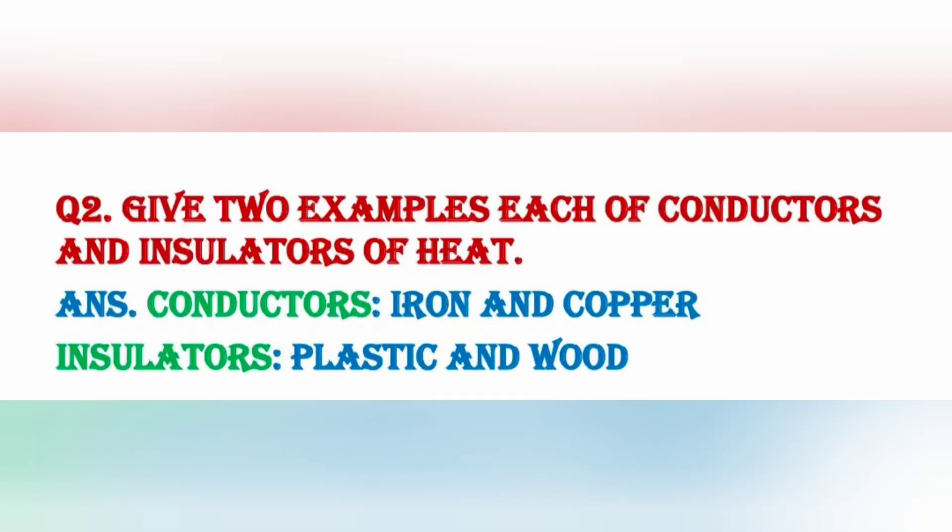Next question: give two examples each of conductors and insulators of heat. तो आपको उष्मा के कुचालक और सुचालक दोनों के दो-दो उदाहरण देने हैं. Conductors — उष्मा के सुचालक — like iron and copper. Insulators — उष्मा के कुचालक — like plastic and wood, जिनमें उष्मा एक पॉइंट से दूसरे पॉइंट की तरफ transfer नहीं होती.